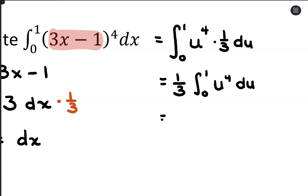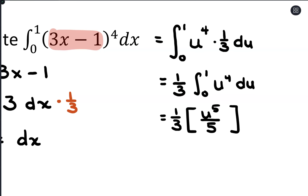So then what we'll have here is 1/3 times, in parentheses, u to the 5th over 5. Taking the antiderivative — we don't need plus c here since this is a definite integral — so u to the 5th over 5, evaluating from 0 to 1.